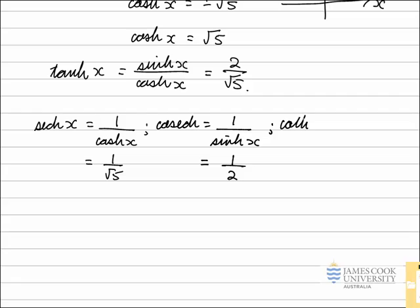And the last hyperbolic function identity, coth x is equal to 1 over tanh x. Using the values we've just found here, we know that that's equal to the square root of 5 divided by 2.